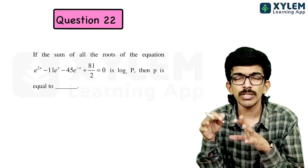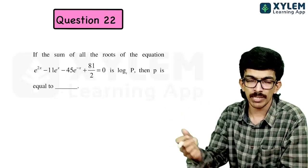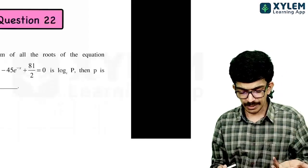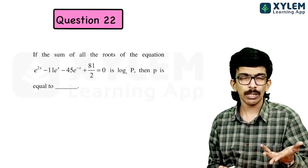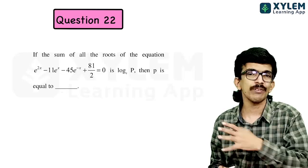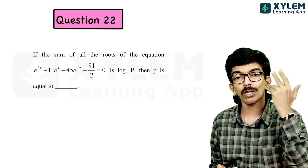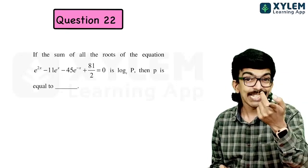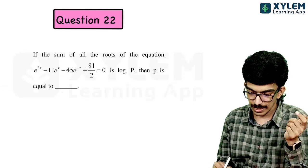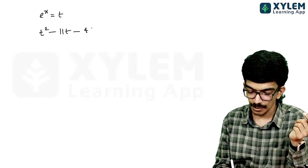The first thing that comes to mind is to substitute e^x = t. You're going to get a cubic equation in t, and finding the sum of all roots seems very straightforward — you might even work it out mentally. So we have t² - 11t - 45/t + 81/2 = 0.